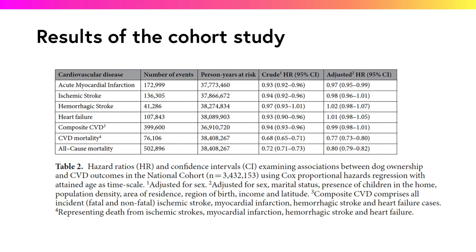We can see that for just one outcome the 95% confidence interval for the crude hazard ratio includes 1 as a possible value. The second set of hazard ratios are calculated adjusted for a number of confounding variables. What is of interest here is that for all the outcomes the estimated adjusted hazard ratios are closer to 1, with 2 of them now being just over 1 and 4 outcomes not showing a significant association of dog ownership with cardiovascular outcomes. This is a good example of how important it is that adjustment for confounding variables is done to produce unbiased estimates of the association of interest.